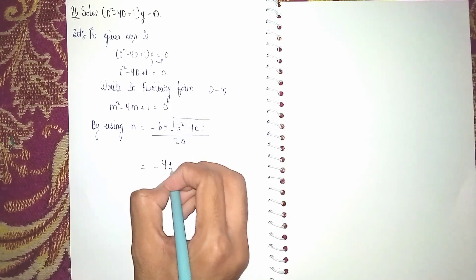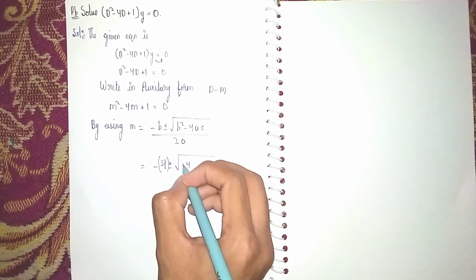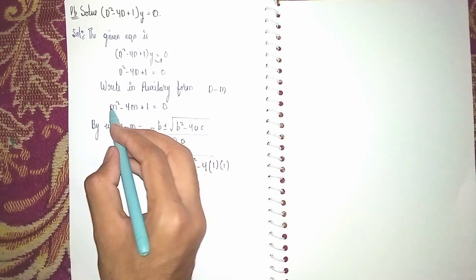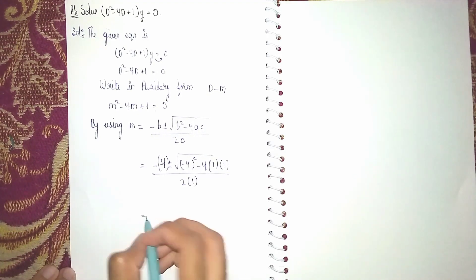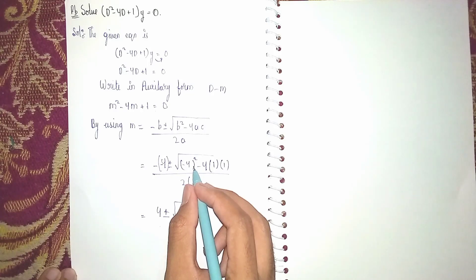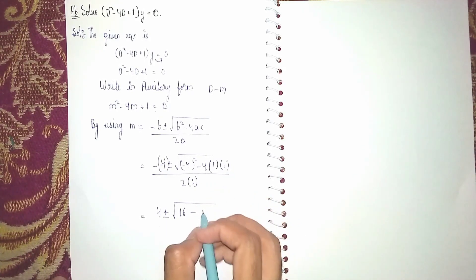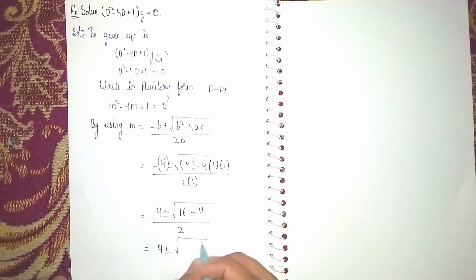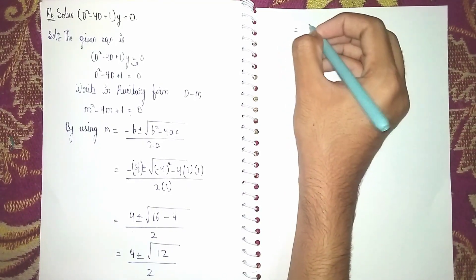Now substituting: b is 4, so we get 4 ± √(4² − 4 × 1 × 1) divided by 2 × 1. Minus into minus becomes plus, so 4 ± √(16 − 4), which is 4 ± √12, all divided by 2. So m = (4 ± √12) / 2.